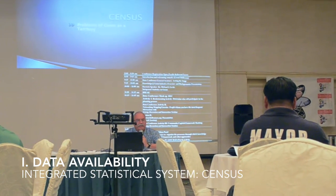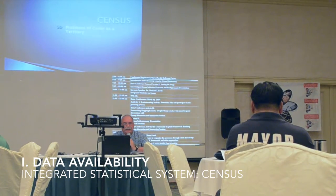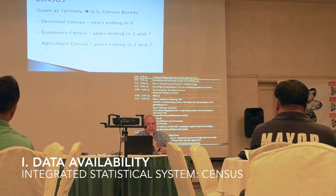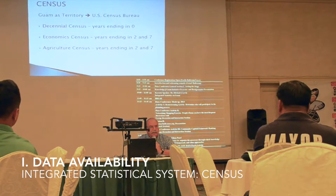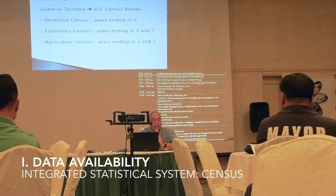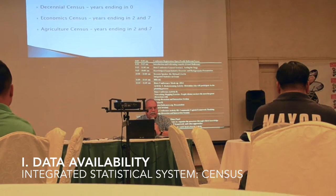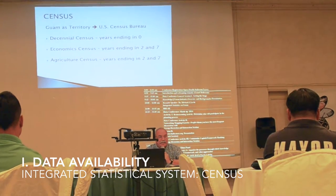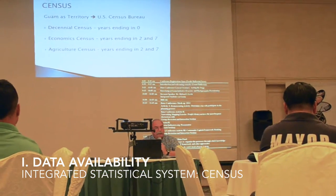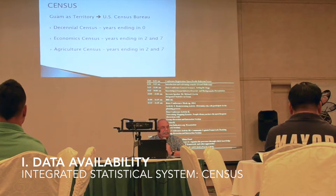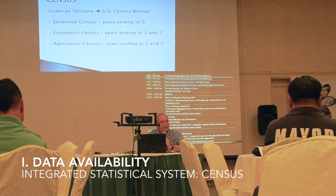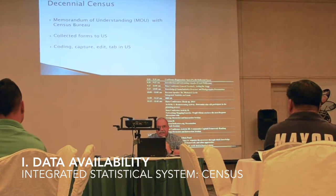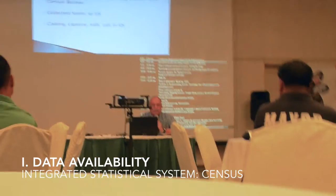I'm going to talk about census first. Because Guam is a territory, not a state, there are a lot of problems with the census. There are three types of federal censuses: the decennial census and the economic census, both from the Census Bureau, and the agriculture census from the Department of Agriculture. The decennial census is years ending in zero; the others are years ending in two and seven.